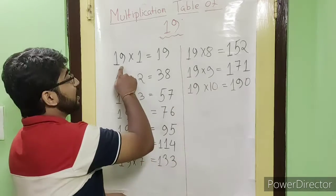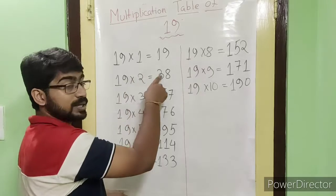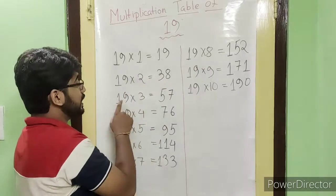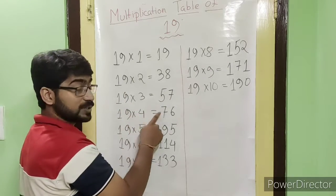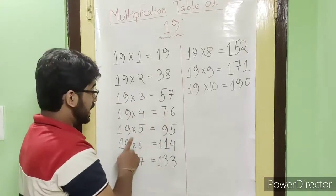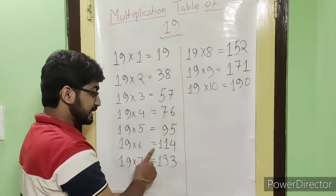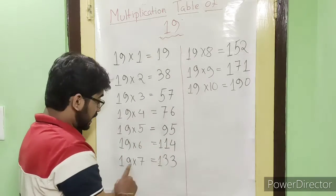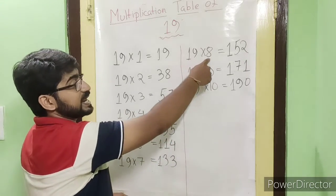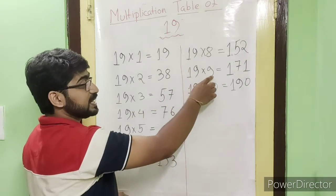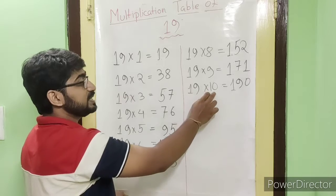19 ones are 19, 19 twos are 38, 19 threes are 57, 19 fours are 76, 19 fives are 95, 19 sixes are 114, 19 sevens are 133, 19 eights are 152, 19 nines are 171, 19 tens are 190.